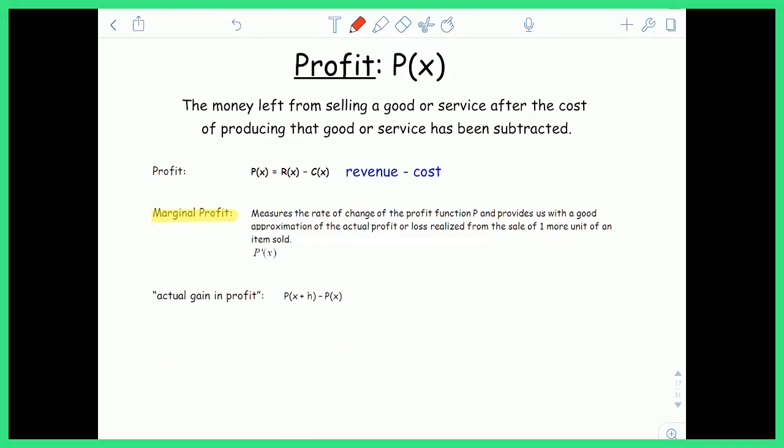Last one we'll consider is profit. Profit is the money left from selling a good or a service after the cost of producing that good or a service has been subtracted. Profit is equal to revenue minus costs. So the profit of a company is all the money that came in after they deduct all the costs that they had. Marginal profit measures the rate of change of the profit after looking at one additional item. And again, you can find the actual profit by just doing P of x plus h minus P of x.